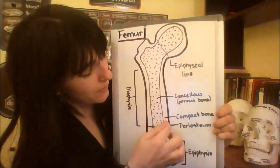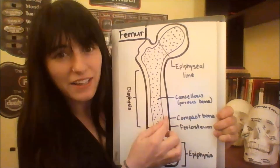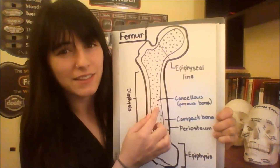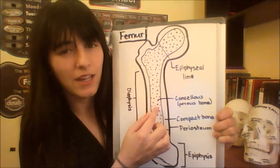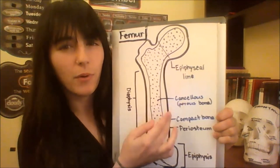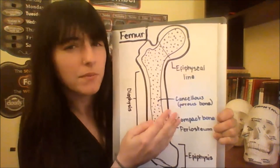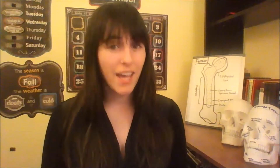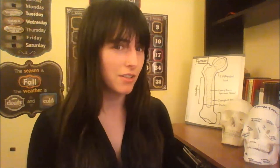Even deeper we have the compact bone, and farther still is the cancellous bone, which is porous and sometimes called spongy bone. The epiphyseal plate, known as the growth plate, is replaced by the epiphyseal line in adulthood.